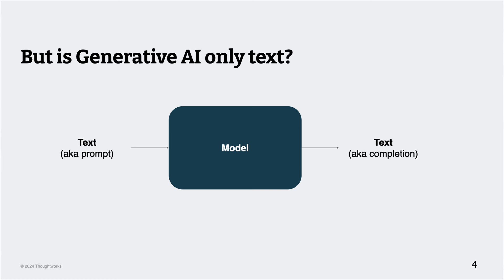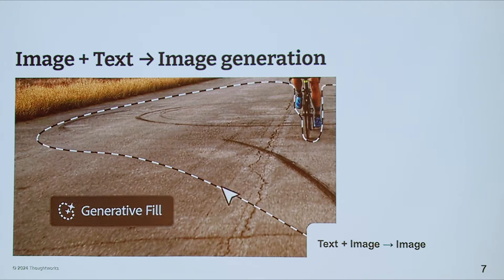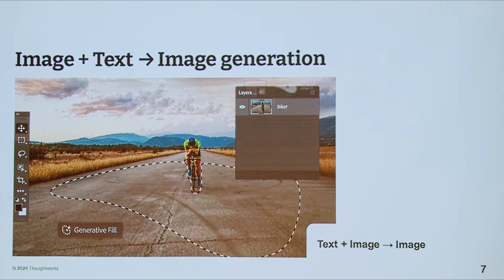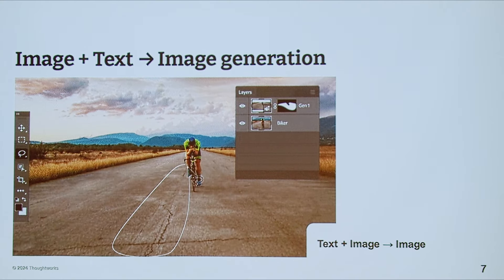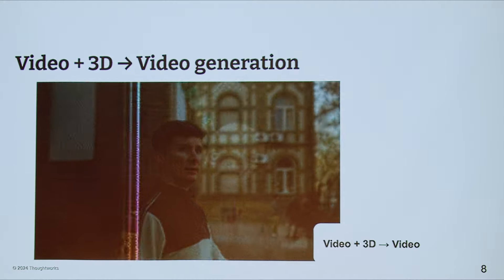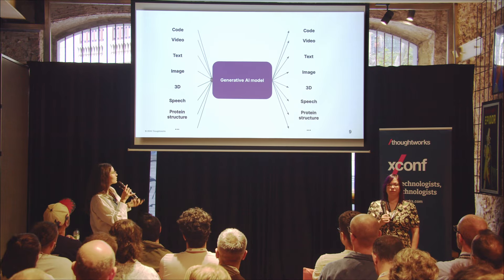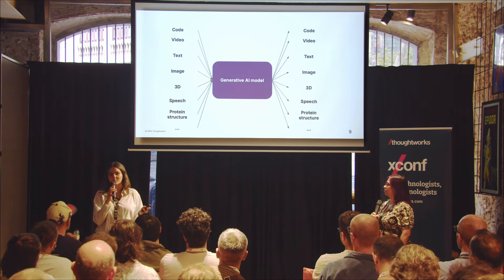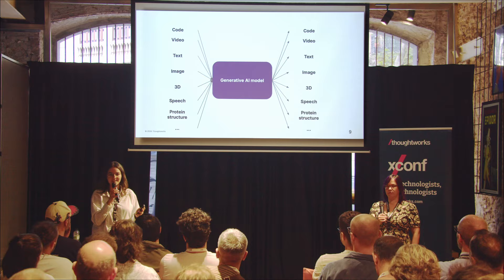So is generative AI only text? Not really. If you've used ChatGPT more recently, there's been more evolution in the image space — not just image generation, but image description, code generation. You can also have image and text as input for another image as output, 3D video generation. So basically, generative AI is for multiple modalities. That's the key takeaway.